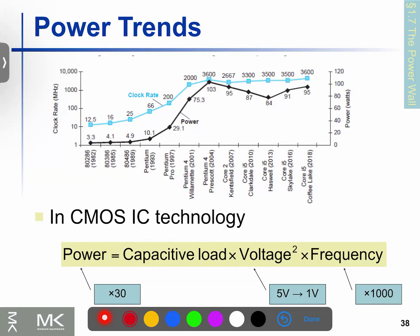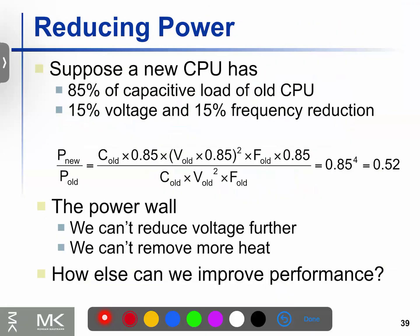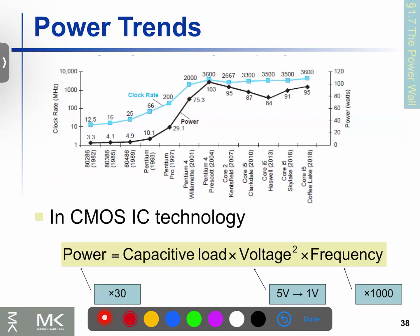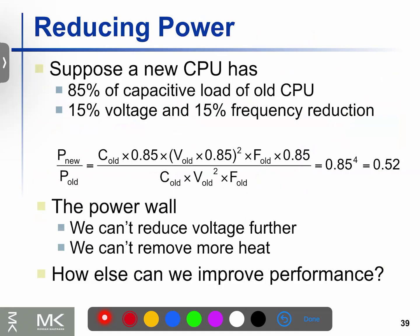Welcome to Part 4 of Chapter 8. As a quick overview, I will show you how to do a formula involving voltage squared and frequency. I will show you the example of the old CPU and the new CPU.